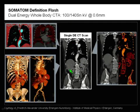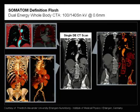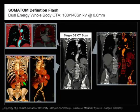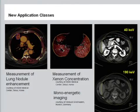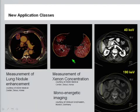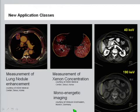Besides the mixed image — which corresponds to a normal contrast-enhanced CT scan — you get a lot of additional information: the virtual non-contrast image, iodine uptake maps, automatic bone and plaque removal, and pulmonary embolism evaluation from the same data set without any additional scan. New applications recently introduced include measurement of lung nodule enhancement and Xenon concentration measurement, which quantifies lung ventilation. The dual source data can also be used to calculate mono-energetic images.